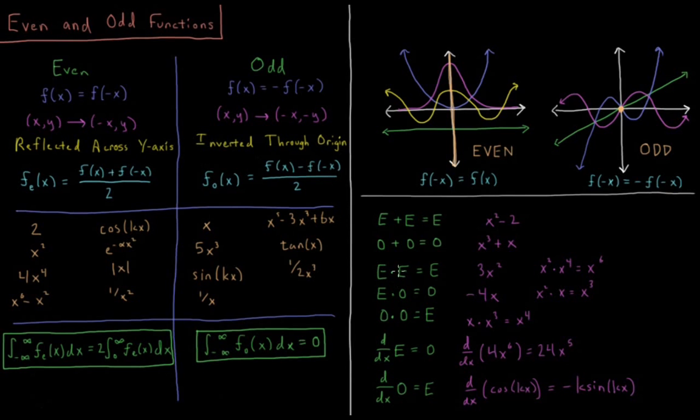Even times even equals even. So 2 is even, x² is even, so 4 and x⁴ are both even. Multiply them together, it's still even.